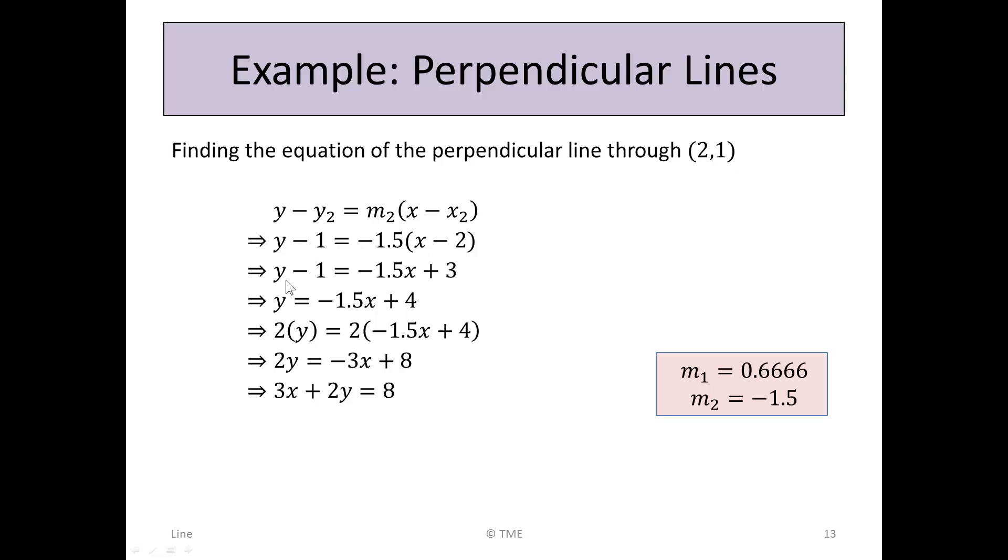Now it's just algebra. y - 1 = -1.5x + 3, so y = -1.5x + 4. We'll multiply everything by 2 to make the numbers integers. 2y = 2(-1.5x + 4) = -3x + 8.